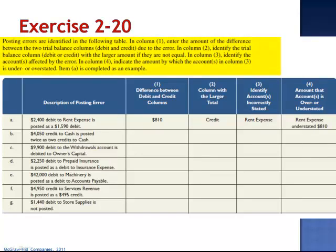Exercise 20. Posting errors are identified in the following table. In column 1, enter the amount of the difference between the two trial balance columns — the debits and the credits — due to the error. In column 2, identify the trial balance column, either the debit or the credit, with the larger amount, if they're not equal.